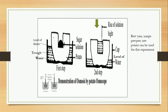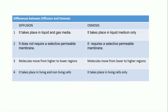Apart from potato, raw yam or ripe pawpaw can also be used for this experiment. Differences between diffusion and osmosis: one, diffusion takes place in liquid and gas media, while osmosis takes place in liquid medium only. Two, diffusion does not require a selective permeable membrane, but osmosis requires a selective permeable membrane. Three, in diffusion molecules move from higher to lower concentration, but in osmosis molecules move from lower to higher concentration. Four, diffusion takes place in living and non-living cells, but osmosis takes place in living cells only.